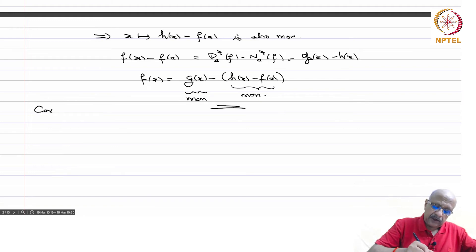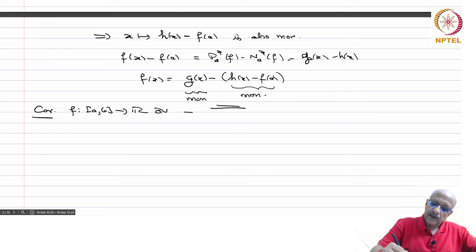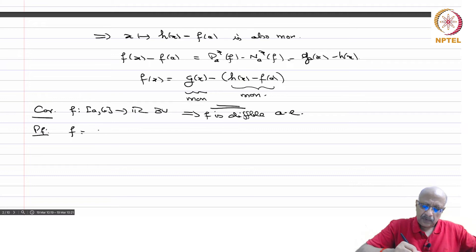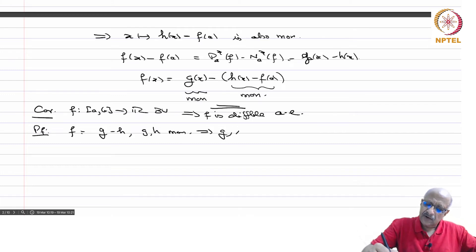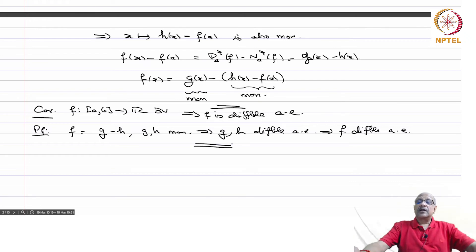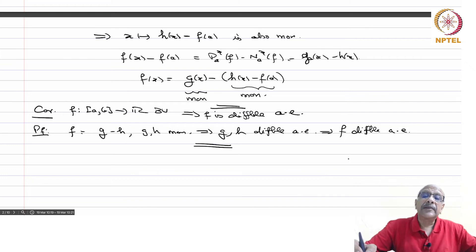An important corollary: f: [a,b] → R of bounded variation implies f is differentiable almost everywhere. Proof: f = g - h with g, h monotonic. This implies g and h are differentiable almost everywhere, and this implies that f is differentiable almost everywhere. Bounded variation functions are another class of functions which are differentiable almost everywhere, necessarily coming from the class of monotonic functions.